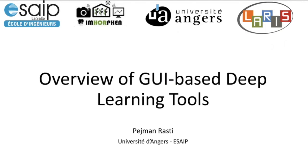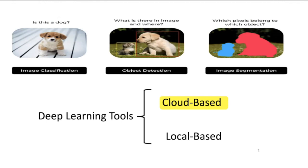For today, I want to go over an overview of the GUI-based deep learning tools that can be used by biologists, medical doctors, or anyone working in a domain who is more comfortable using a tool instead of writing code. For any tasks in computer vision, the most common ones are image classification, object detection, image segmentation, denoising, image translation, and so on — we call these tasks of computer vision.